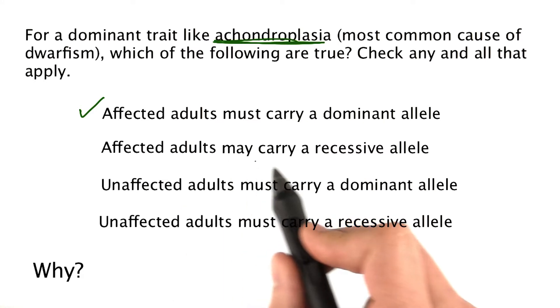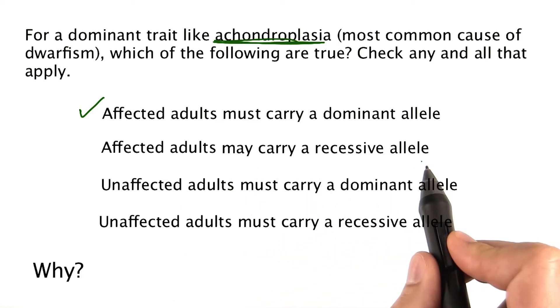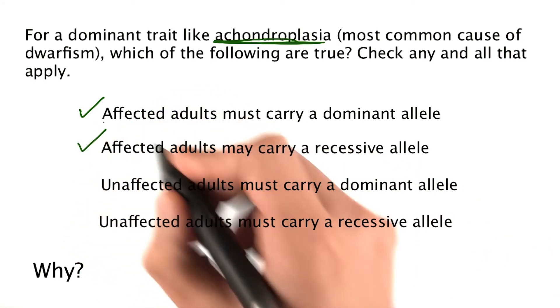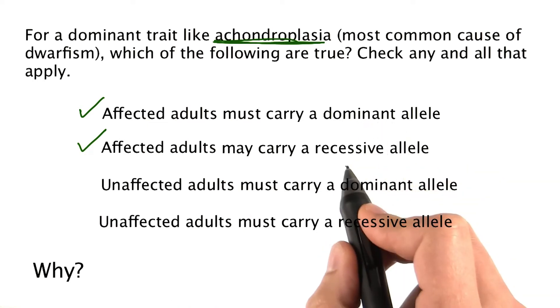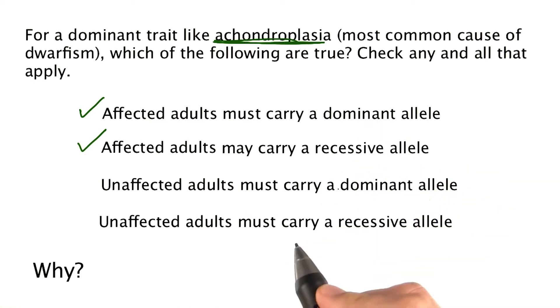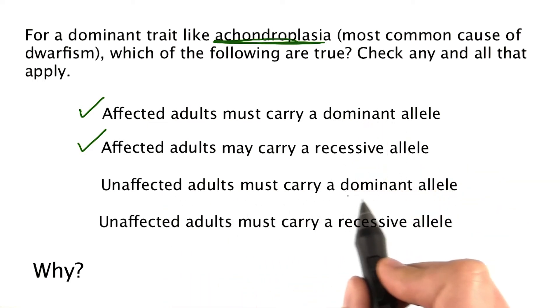What about: affected adults may carry a recessive allele? Well, that's possible too, right? You can be heterozygous — you'd have one of the dominant alleles and one of the recessive alleles.